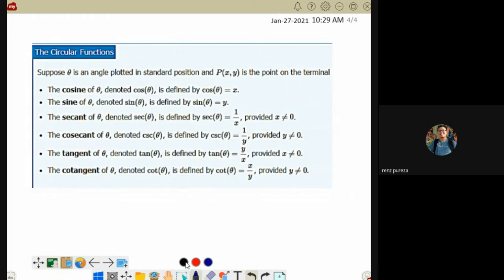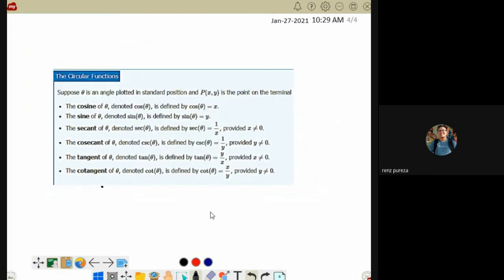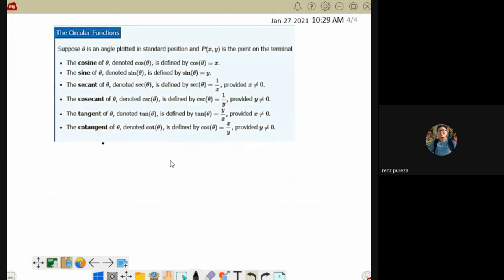Even after I say that, some students still say it's confusing because they sound similar. Secant, cosecant, sine, cosine. So we have a reminder for that. Remember, when you see cosine, look at the first letter.